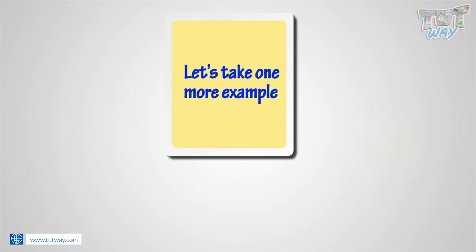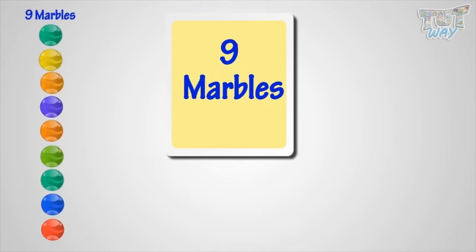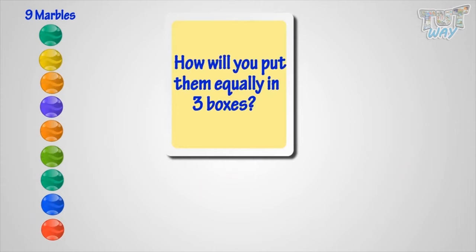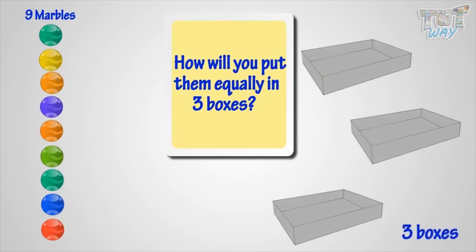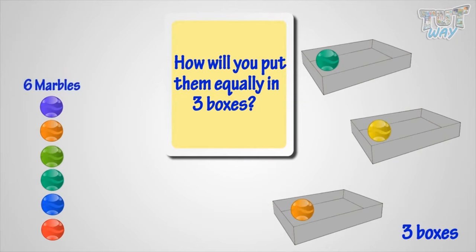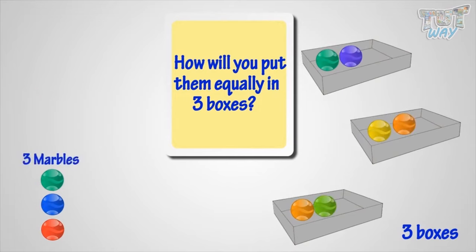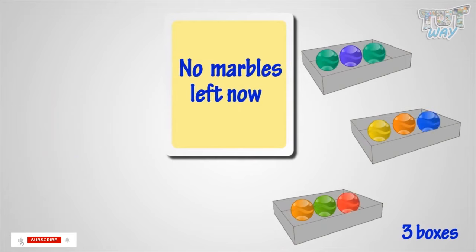Let's take one more example. There are nine marbles. How will you put them equally in three boxes? Let's see. First, put one marble each in a box. Marbles left. Now add one more in each box. Marbles left. Now add one more in each box. No marbles left now. Yay!